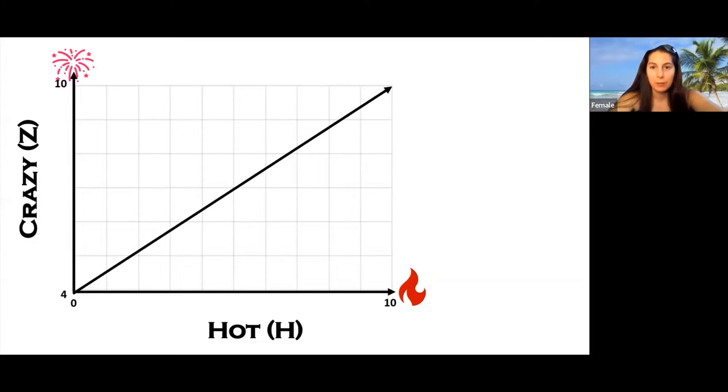To find the equation of this line we take the rise over the run and include the z intercept. In this equation z is crazy and h is hot.